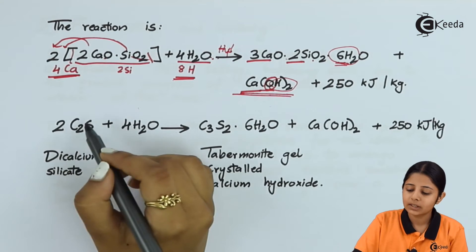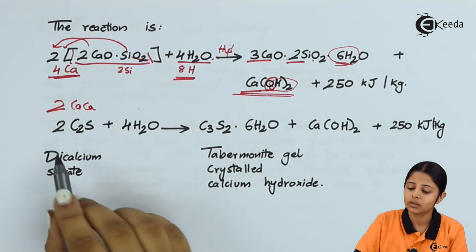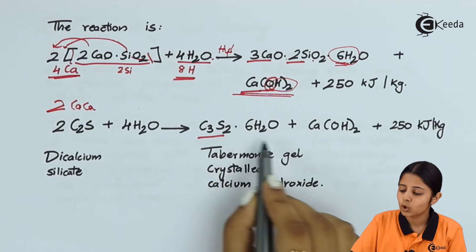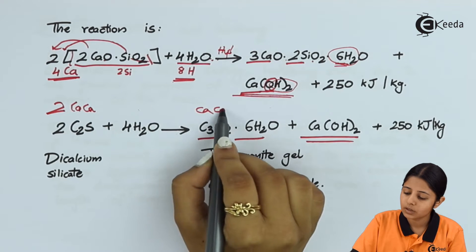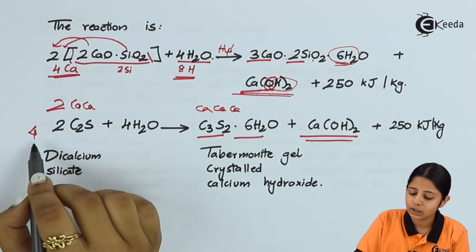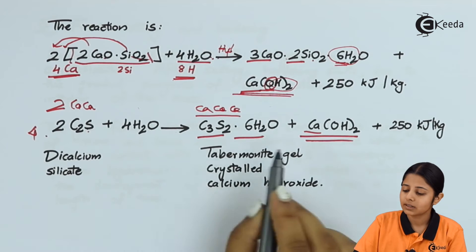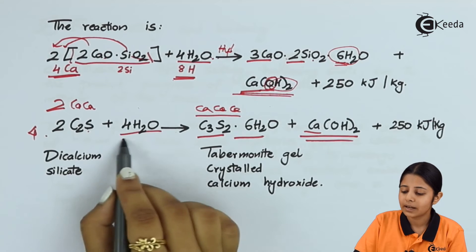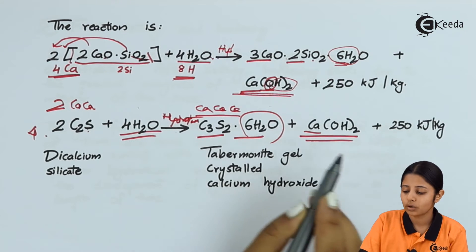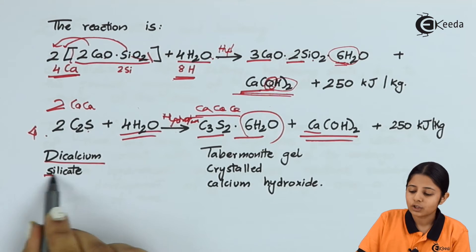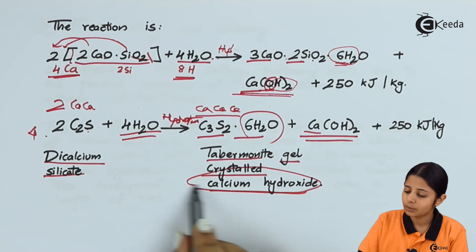In shorthand notation, the C2S reaction is written as: 2C2S + 4H₂O → C3S2·6H₂O + Ca(OH)₂. On the reactant side, two times two calciums gives four calciums; on the product side, three plus one also gives four. There are two silicons on each side, and the excess water on the product side reflects the hydration process taking place.